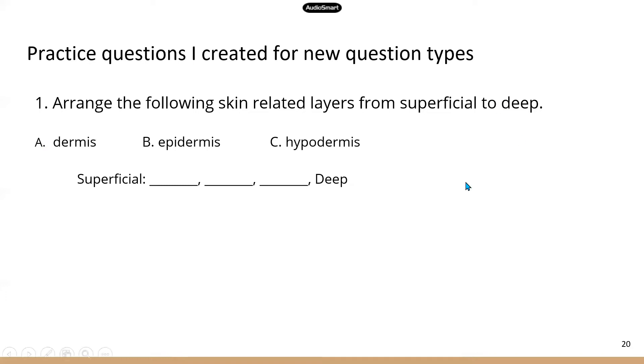All right. Arrange the layers from superficial to deep. So in order to answer this question correctly, you need to know what superficial and deep mean - those are directional terms. And you also need to know where these three layers are located. So from superficial to deep, that will be epidermis B, and dermis A, and then C, hypodermis. Epi means around, like on the surface, and hypo, that means below. So epidermis is going to be on the surface, most superficial layer, dermis next, and then hypodermis. That means this layer is below dermis.